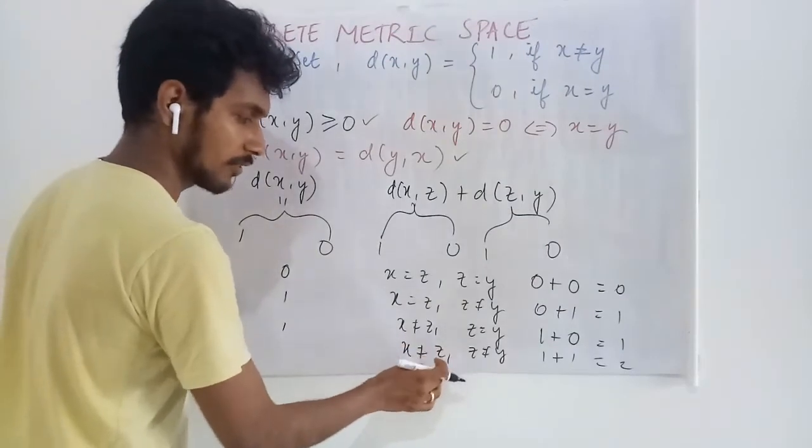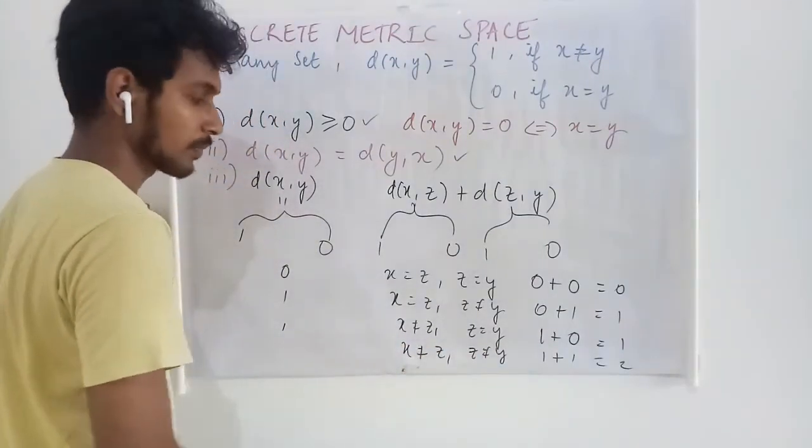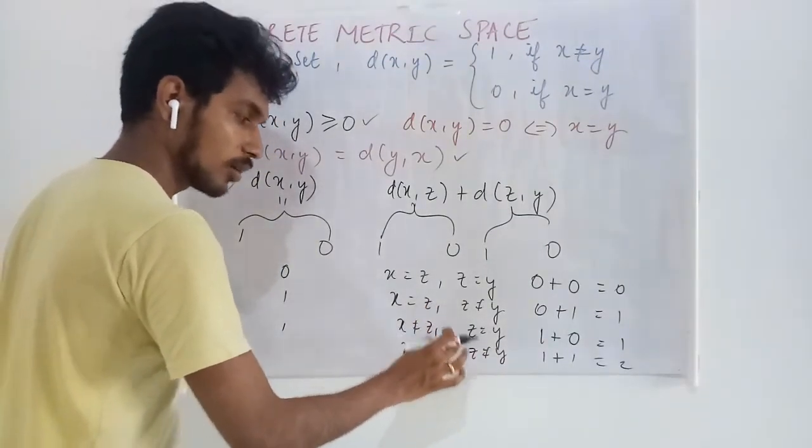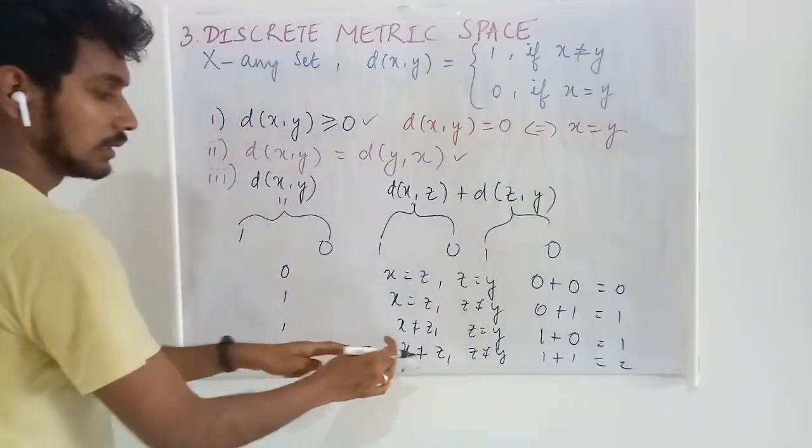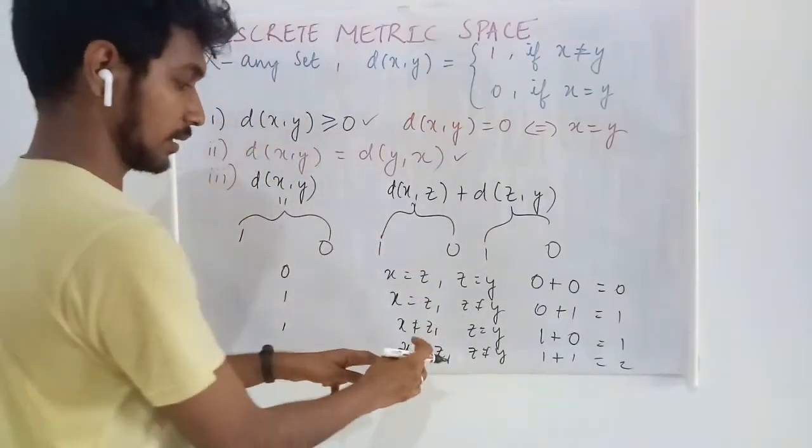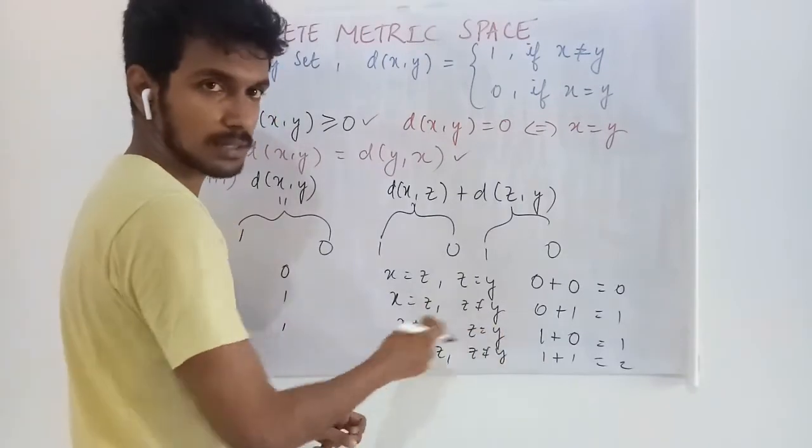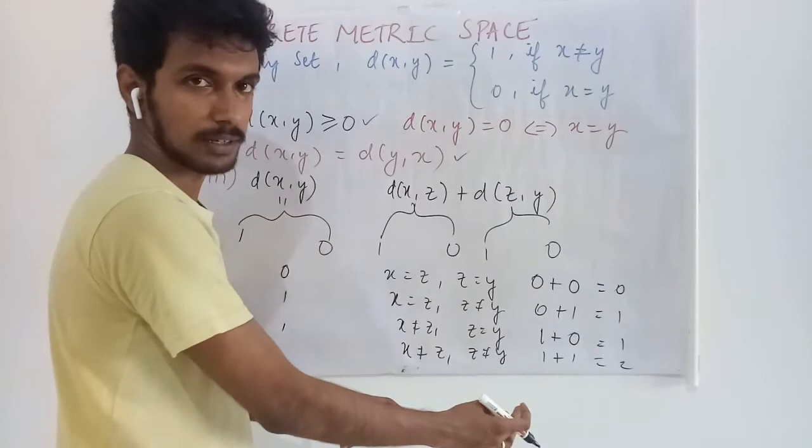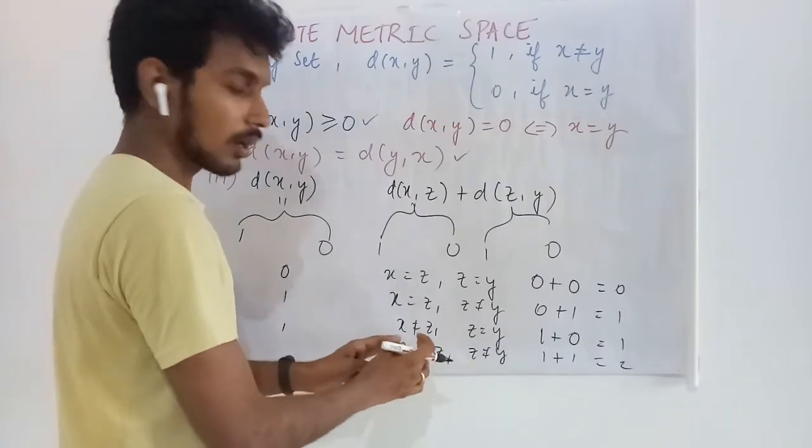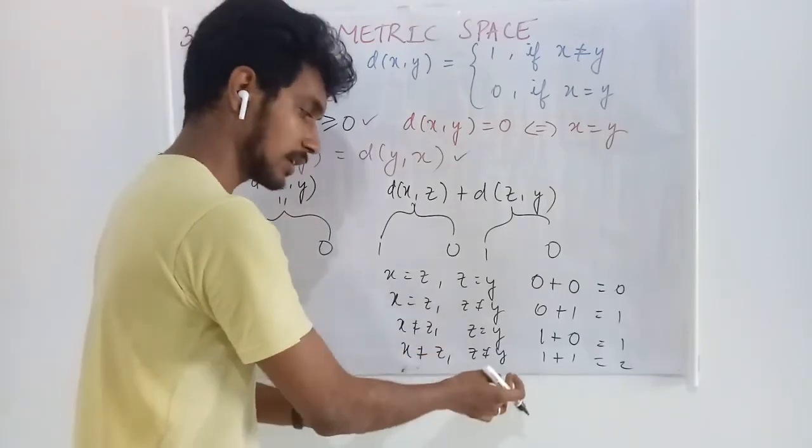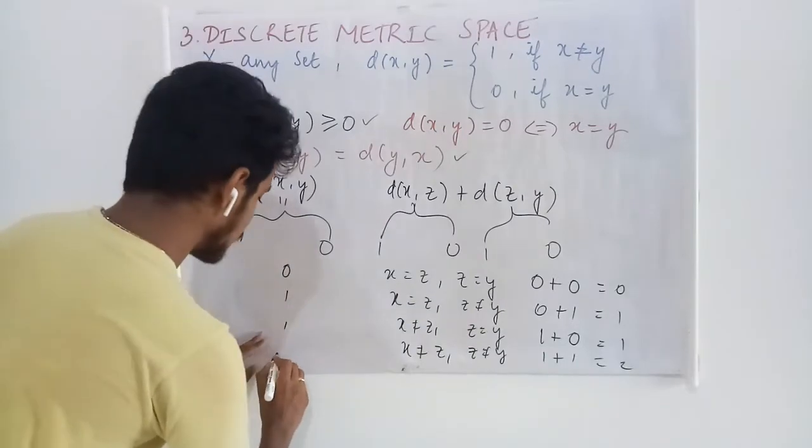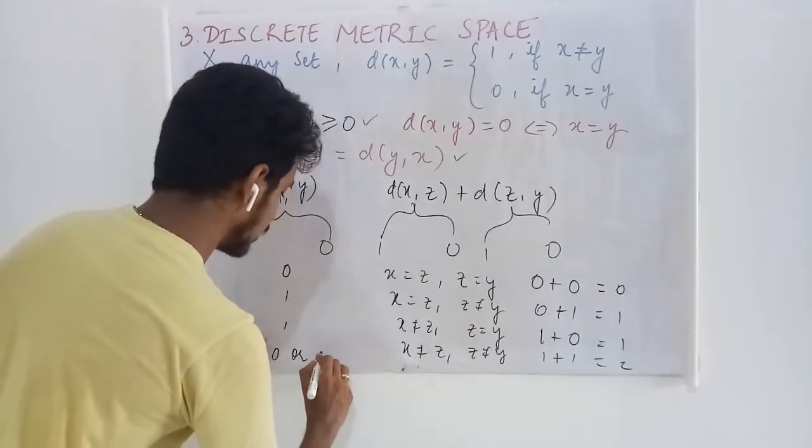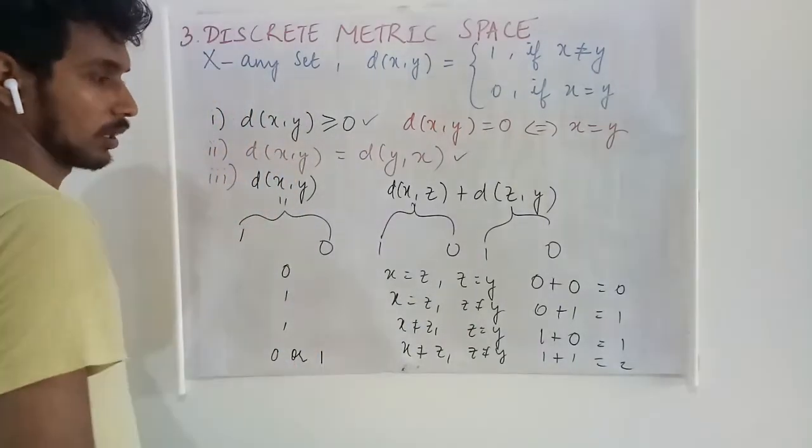Here, x and z are different and z and y are different. And this may lead you in two ways. z is different from x and y, but you don't have any guarantee that x and y are different. In that case, if x and y are same, you will get 0. Or if they are different, you will get 1.